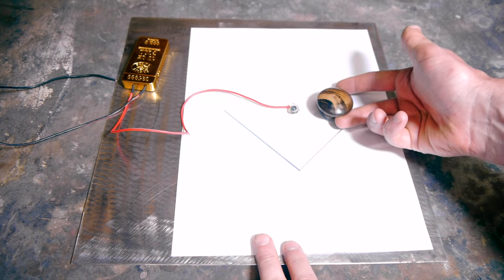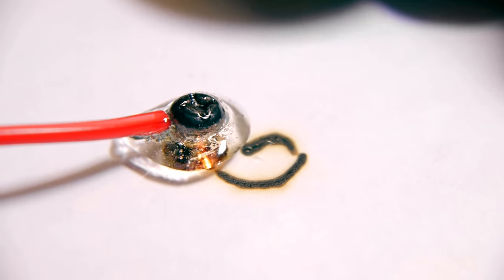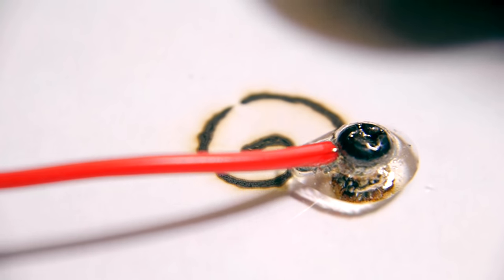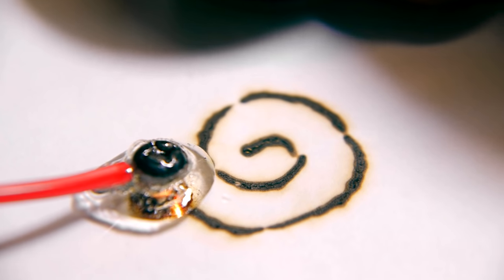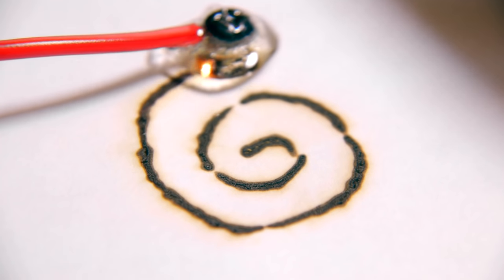The arc provided by the lighter can easily cut thin materials like paper, and since the glass and steel base plate absorb the excess heat, the paper burns only where the arc passes through.